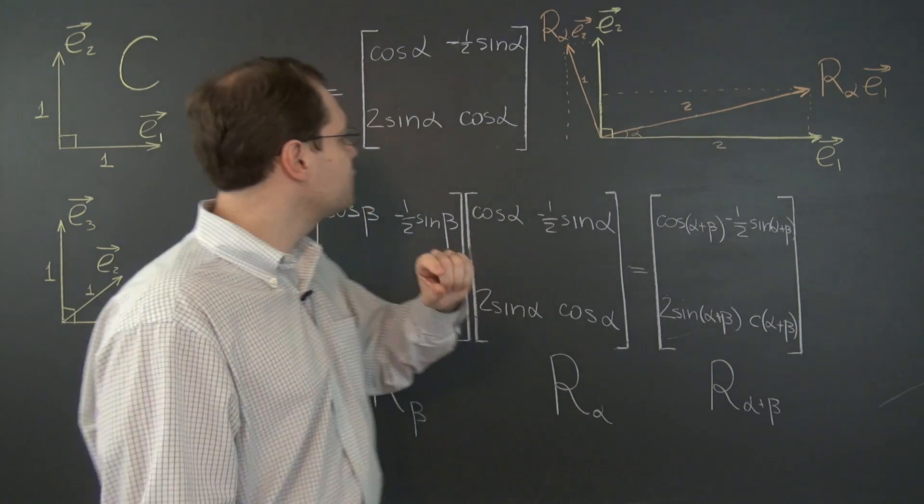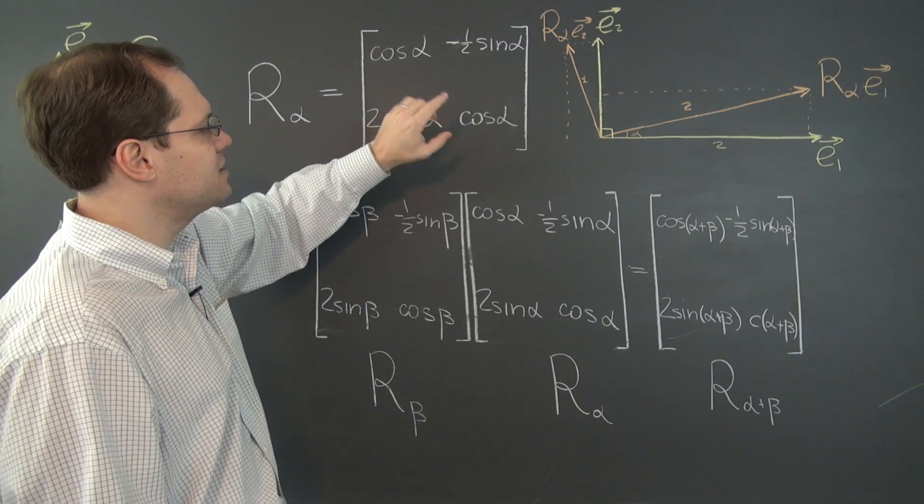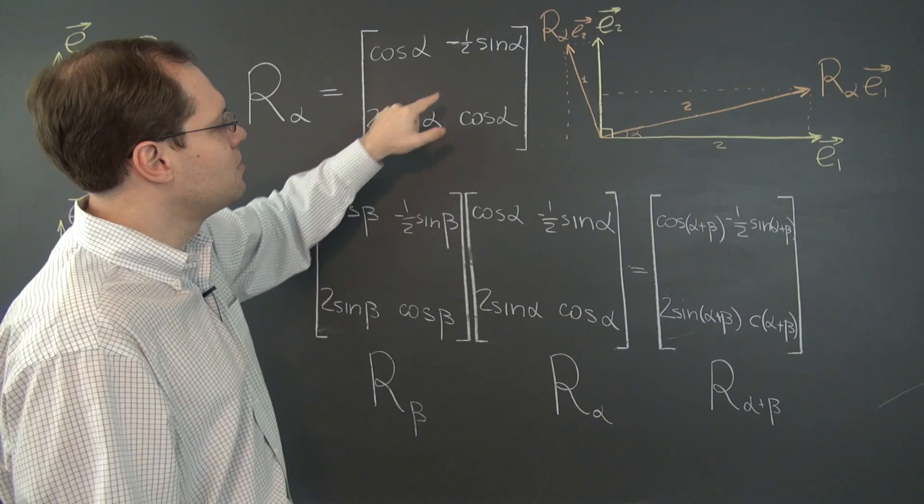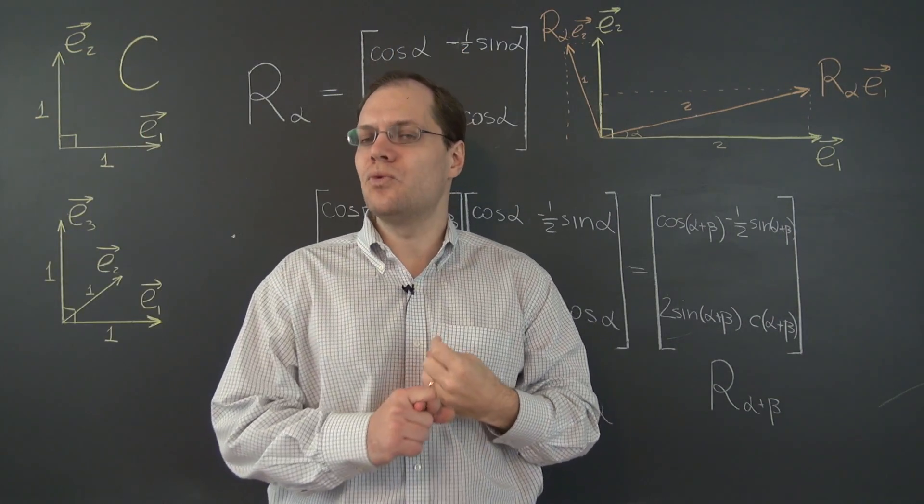So we have cosine squared alpha, the minuses cancel, minus, minus. So cosine squared alpha plus 2 cancels 1 half plus sine squared alpha. Once again, 1.